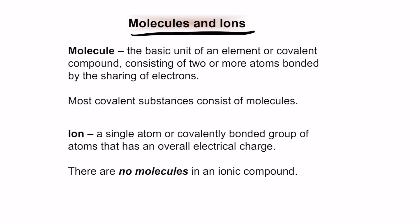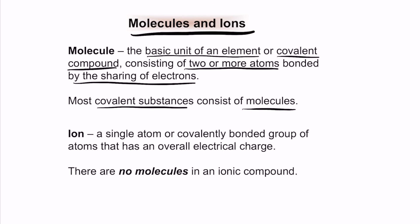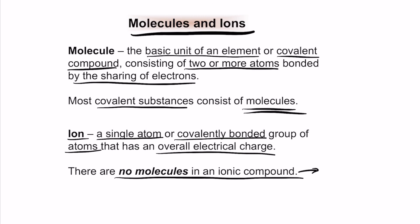The basic unit of a covalent compound consists of two or more atoms bonded by sharing of electrons. Most covalent substances consist of molecules. Ions are a single atom or a covalently bonded group of atoms that have an overall electric charge. Ionic compounds comprise of ions; covalent compounds consist of molecules. The main difference is that ionic compounds contain charges and covalent compounds contain molecules.